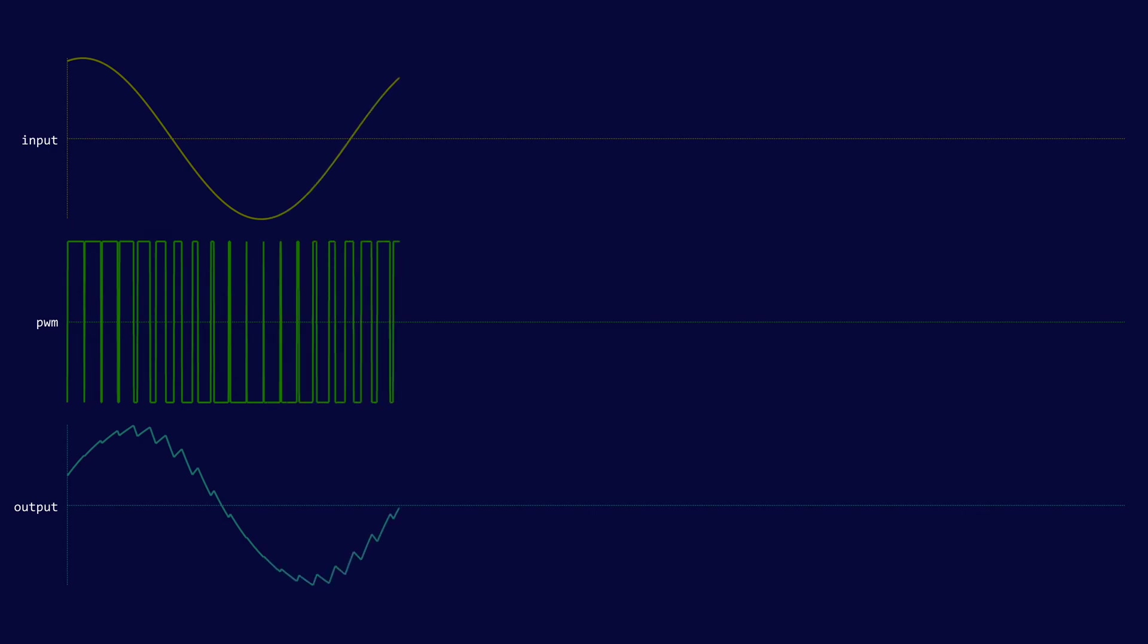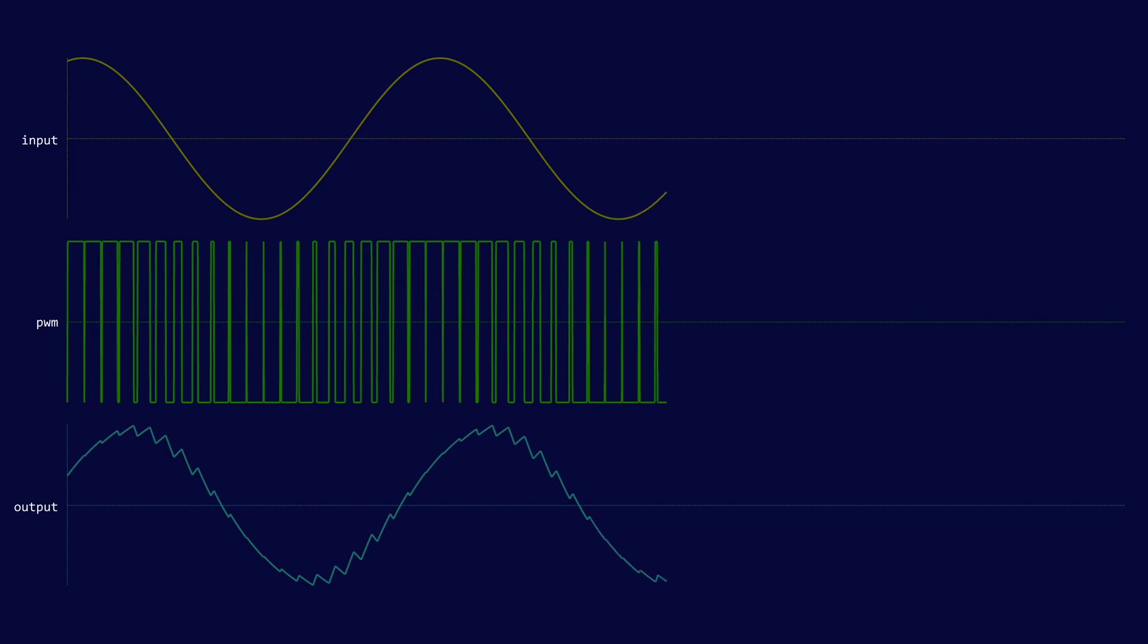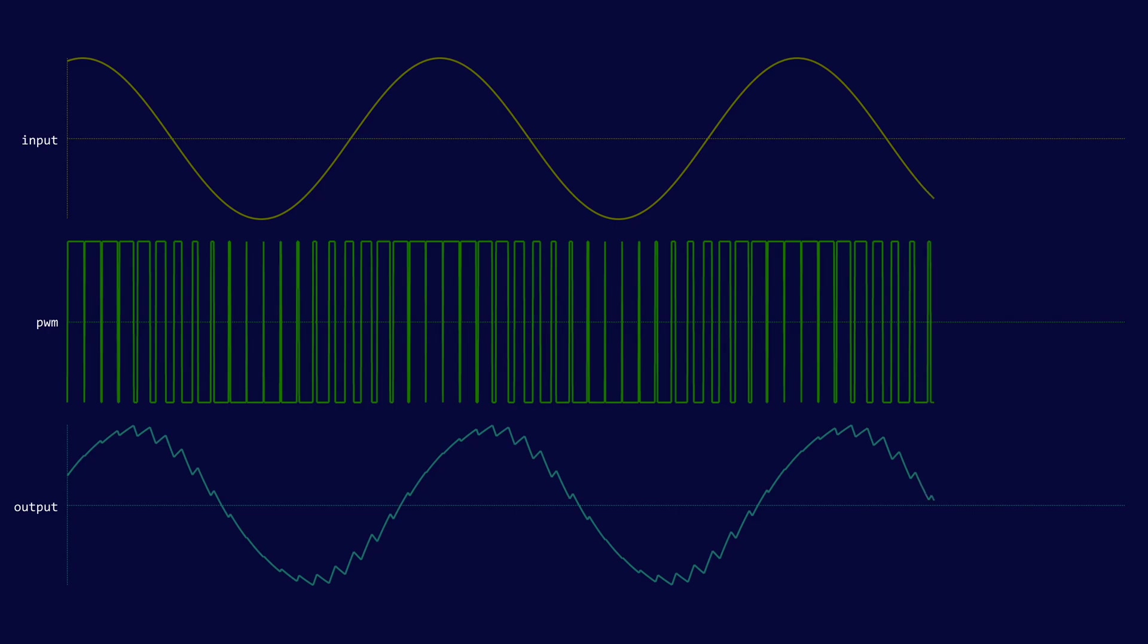This animation demonstrates this process. We have an input sine wave coming into the system. This input signal is then converted to the PWM signal and then we reconstruct the output by low pass filtering the PWM signal. In this animation I am using a very low frequency for the PWM signal so our reconstructed signal is very noisy.